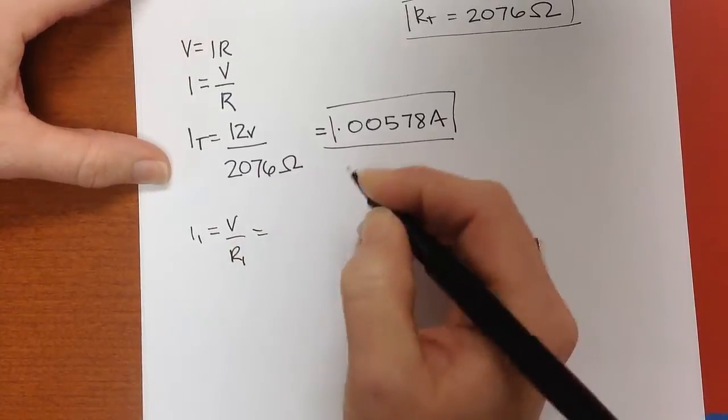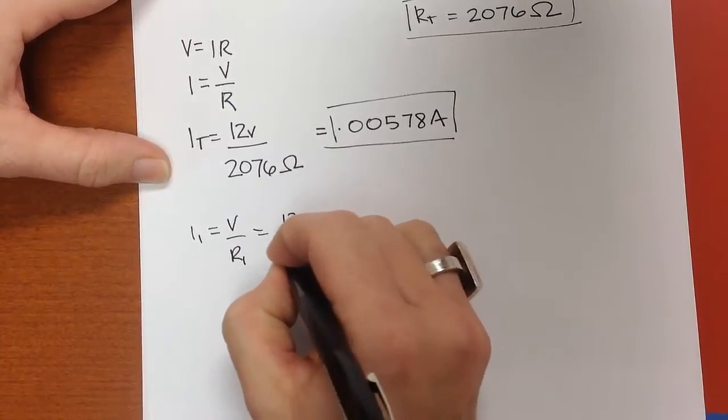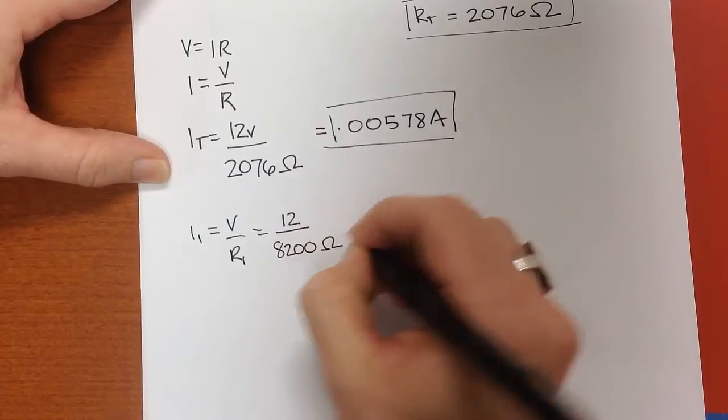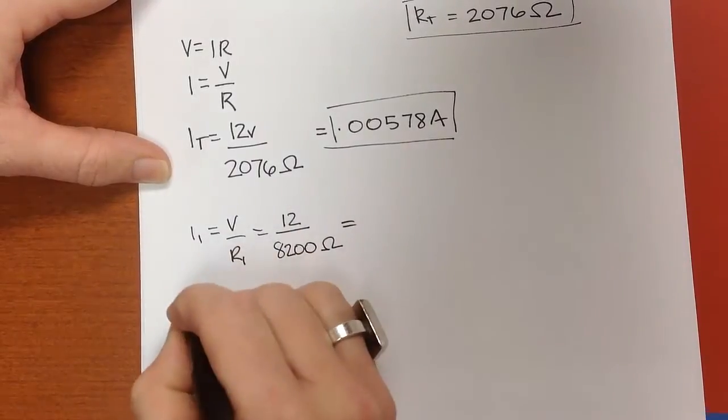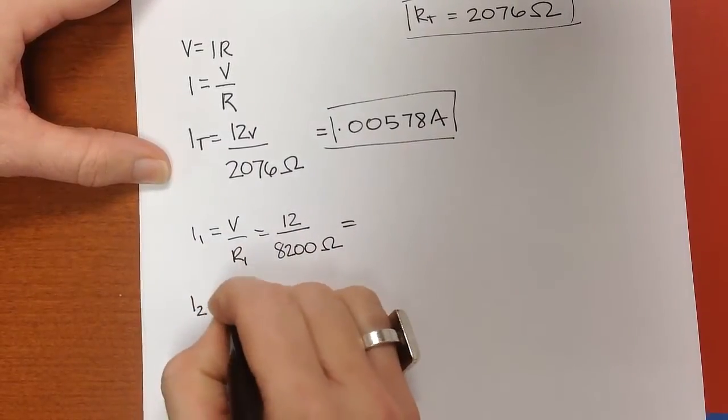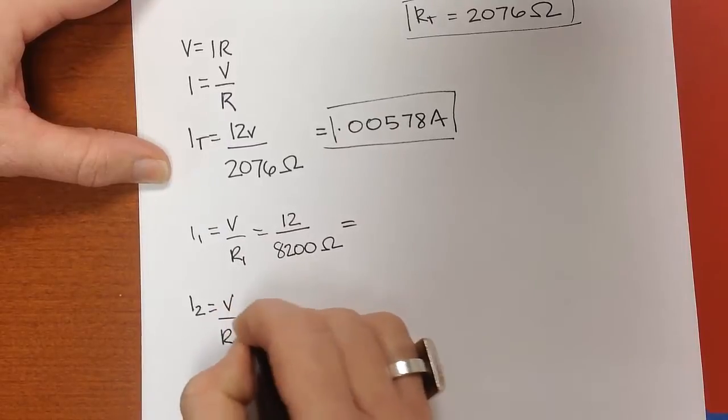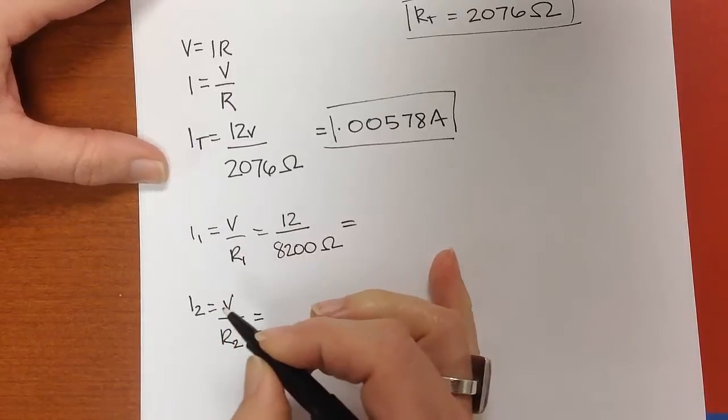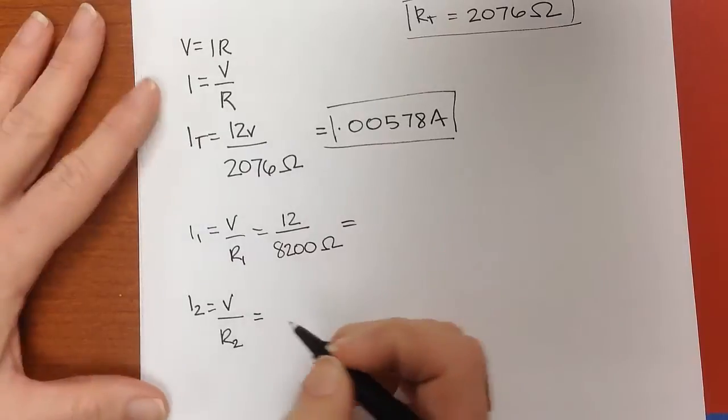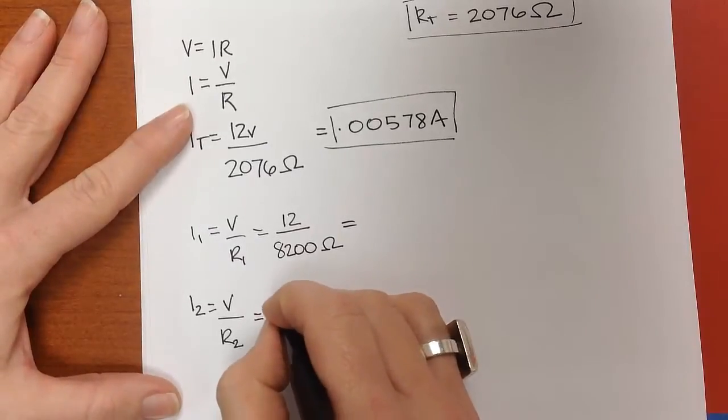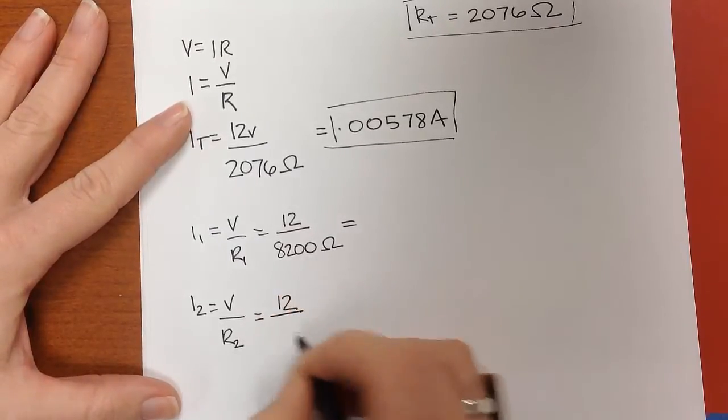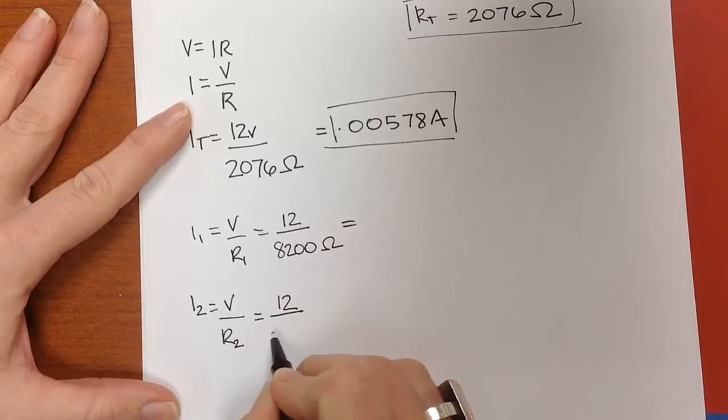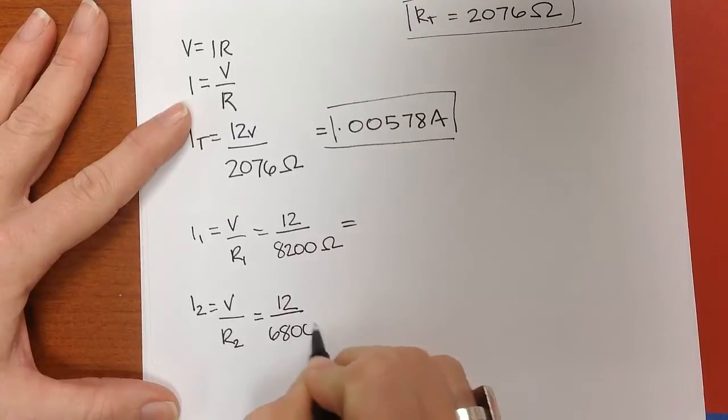And that's going to be 12 divided by 8,200 ohms. So I2 is going to be V divided by R2, and that is 12 divided by 6,800 ohms.